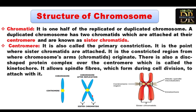Here is the structure of a chromosome. A typical chromosome contains two arms known as chromatids. Here is the chromosome and here is the centromere. These arms, or duplicate chromosomes, are known as chromatids, and these chromatids are attached together by means of the centromere.